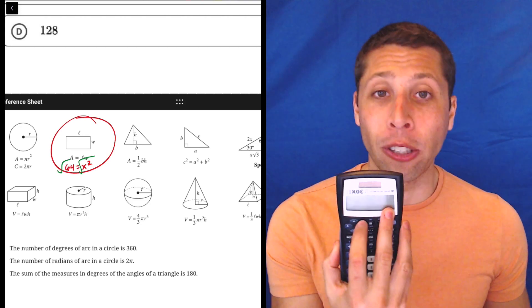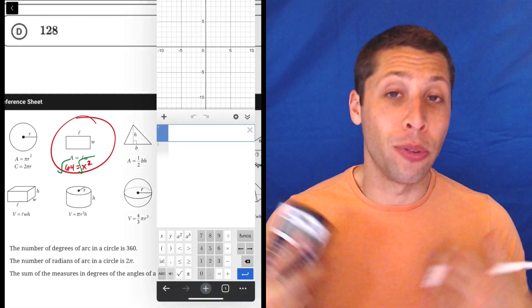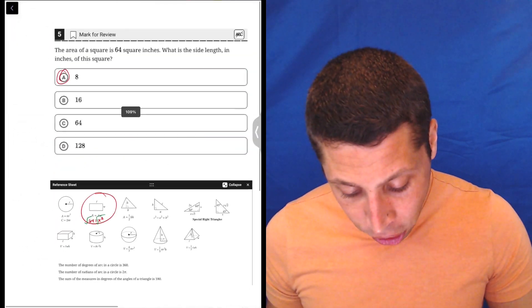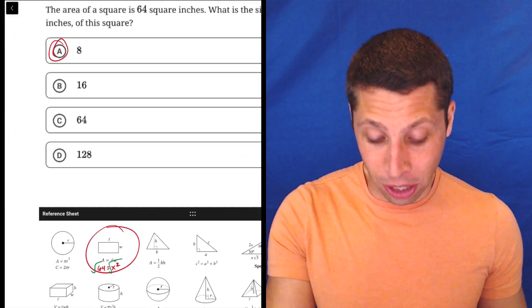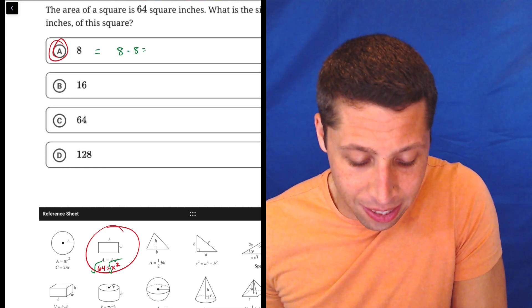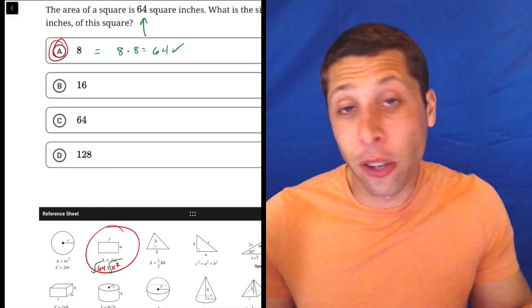You can plug it into a calculator that you've brought, you can plug it into the Desmos calculator if you need to, or we could just guess and check, right? Because there's only four answers here. So just do, okay, if 8 were x, then 8 times 8 is 64, and that's what I wanted, so I'm done.